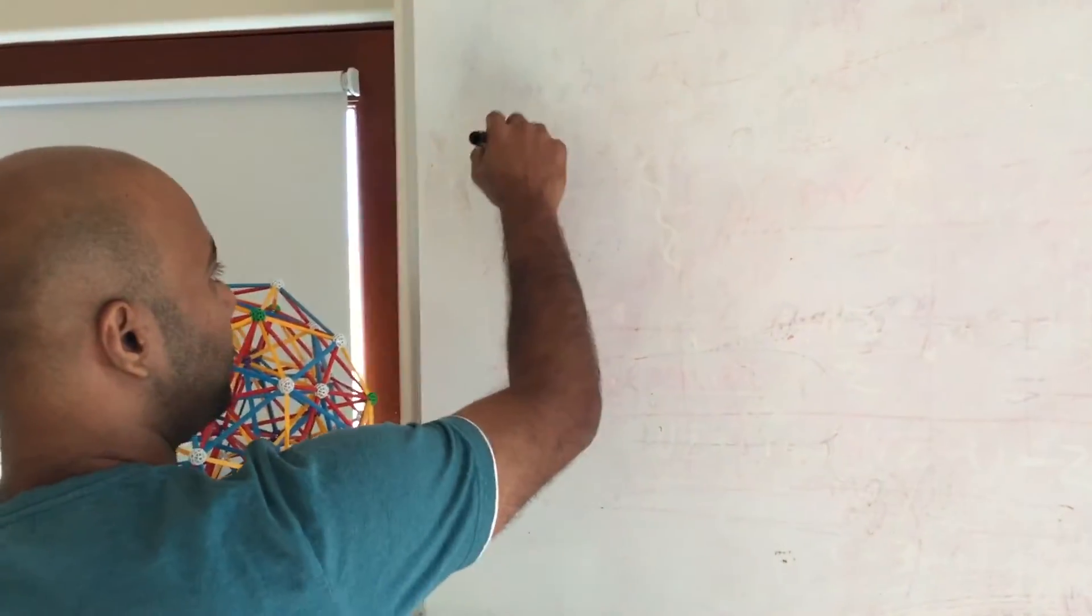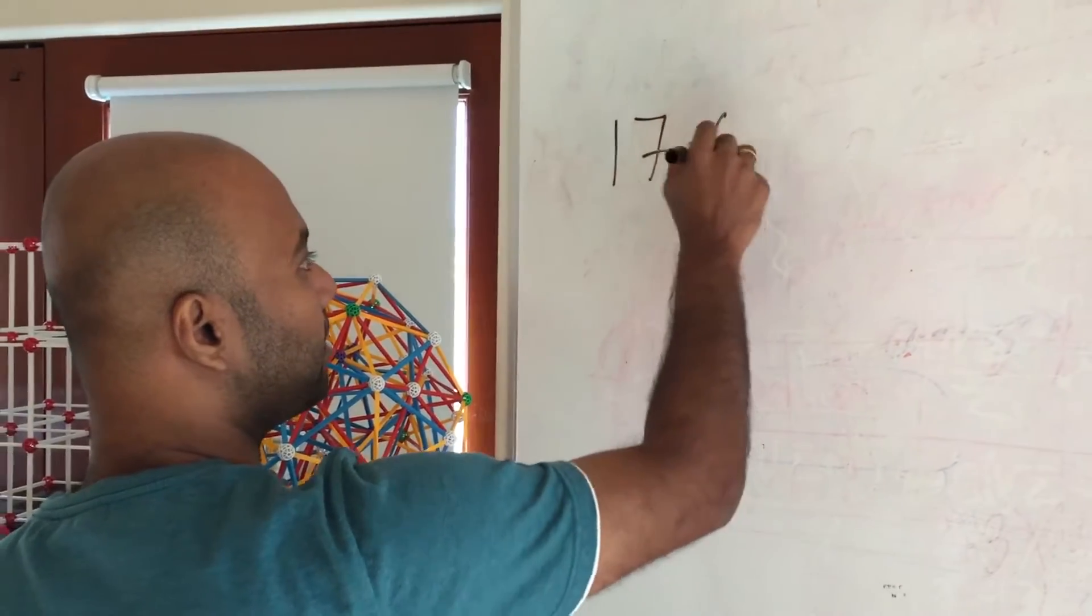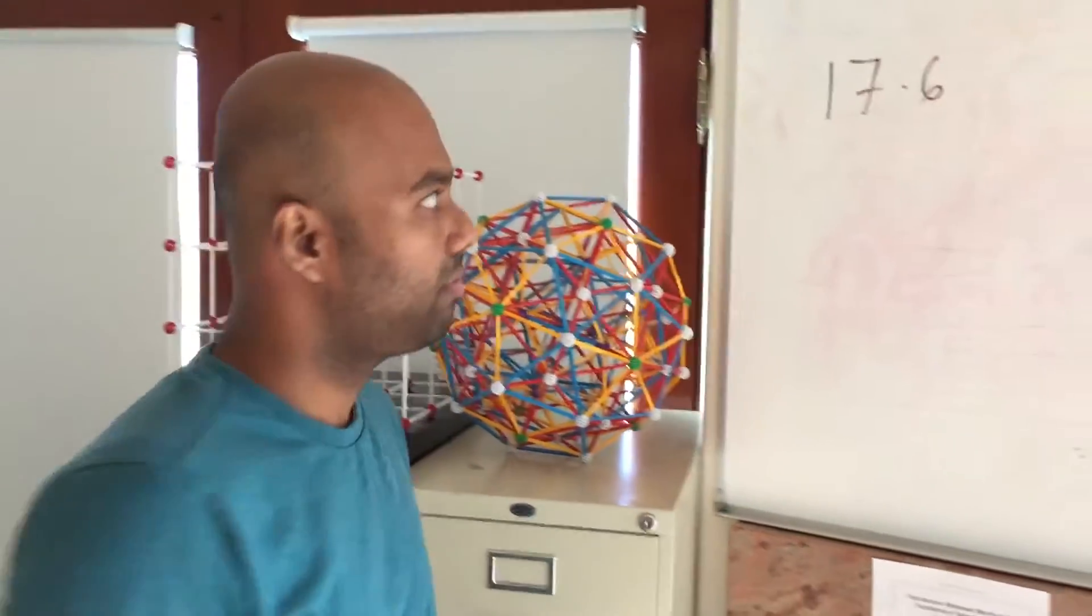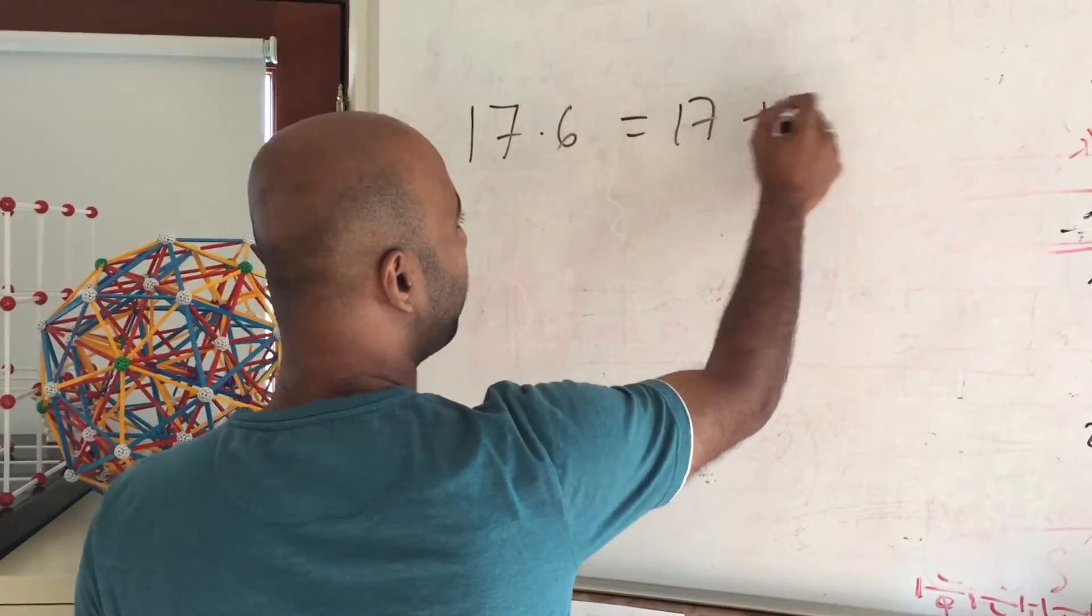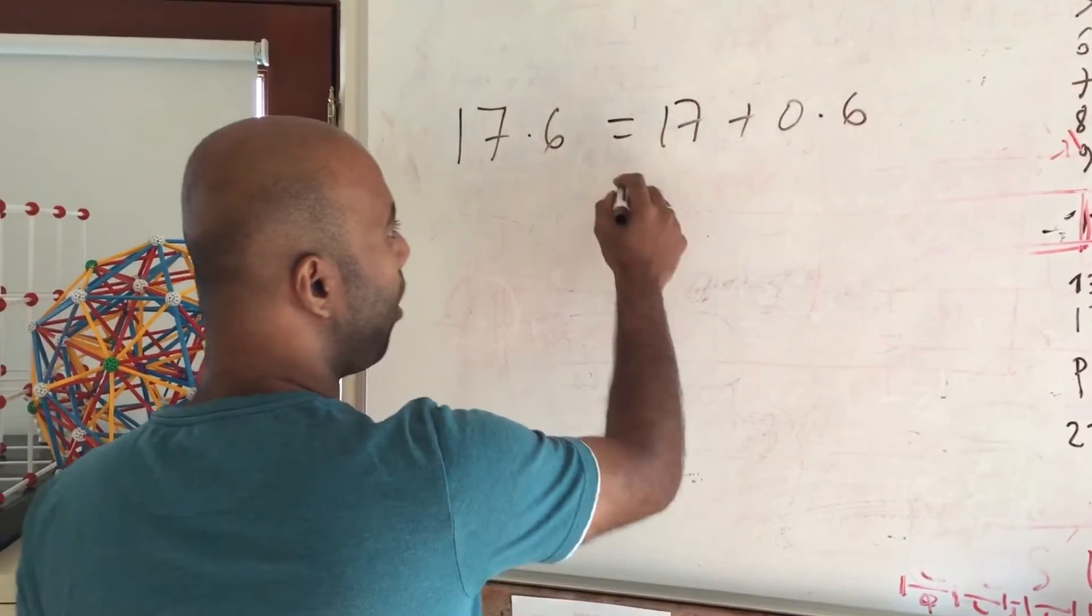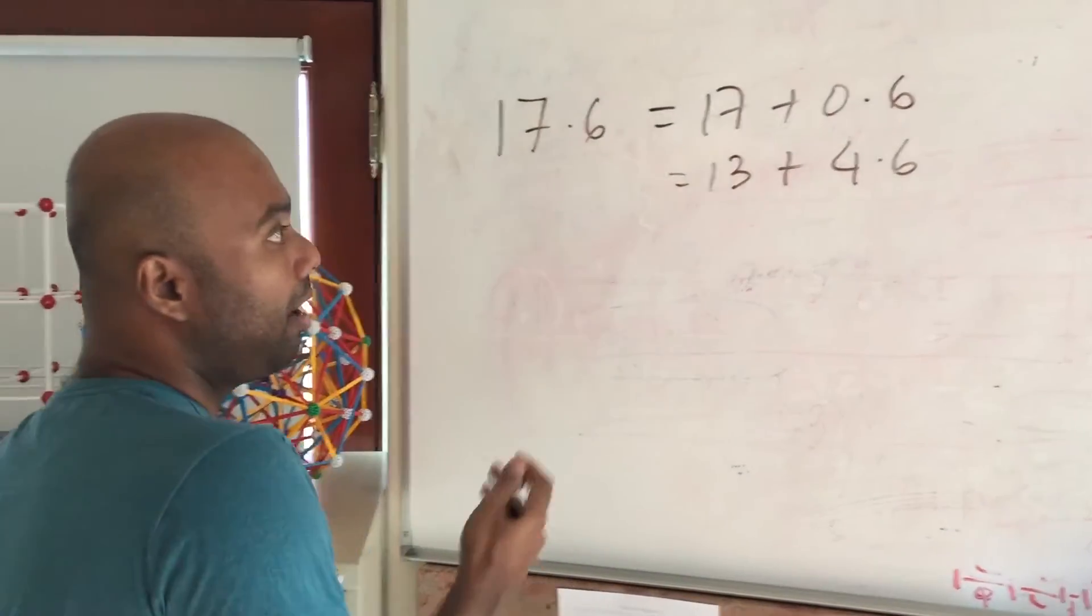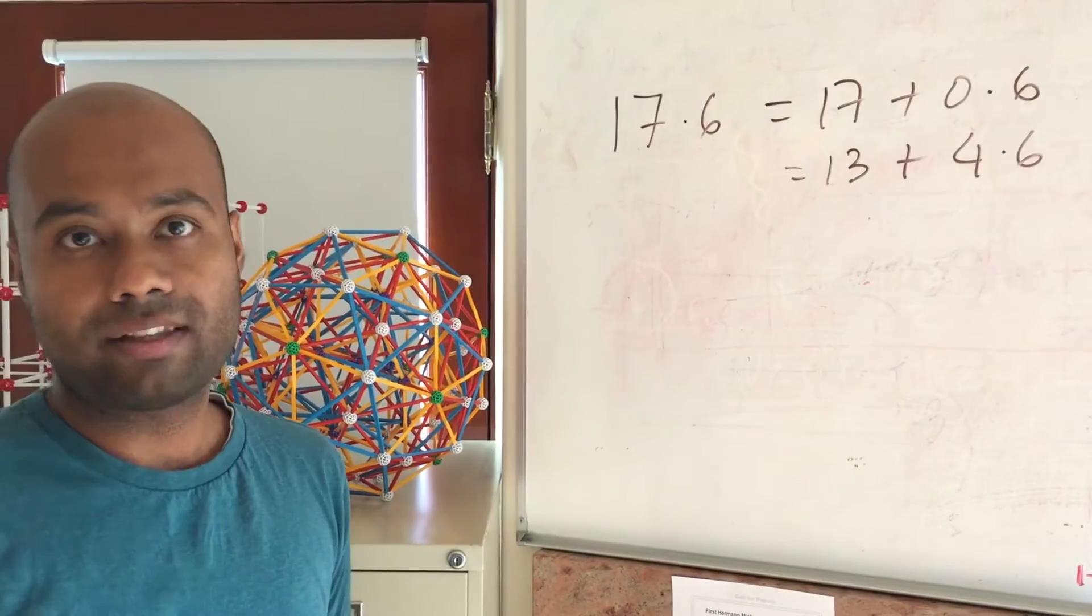Think about a number, let's say 17.6. One can write the number 17.6 in many ways. One of the trivial ways of writing the number would be 17 plus 0.6, or you could say 13 plus 4.6, or you could do fancier stuff.